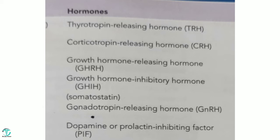We will not go deeply into each hormone here — we will discuss particular glands and their secretions in further videos. The second hypothalamus hormone is corticotropin releasing hormone. The third is growth hormone releasing hormone. The fourth is growth hormone inhibitory hormone. The fifth is gonadotropin releasing hormone. The sixth is dopamine, also called prolactin inhibiting factor.